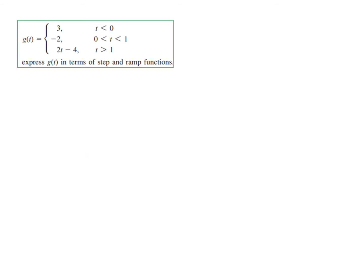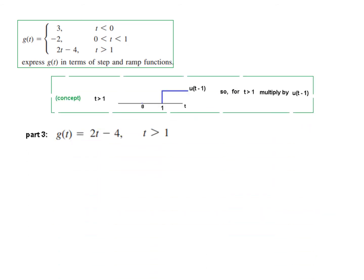The third part is t for t greater than 1. Here, t greater than 1 means that from t=1 we have a unit step function going in the positive direction, so we multiply t by u(t-1).